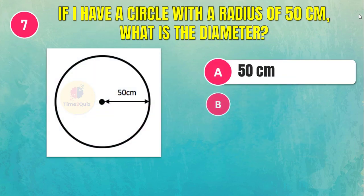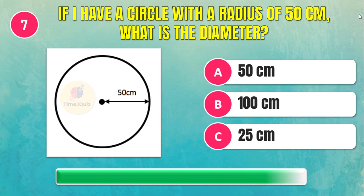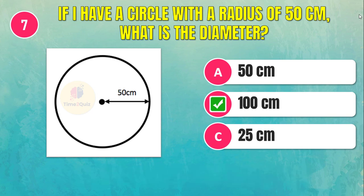If I have a circle with a radius of 50 centimeters, what is the diameter? 100 centimeters.